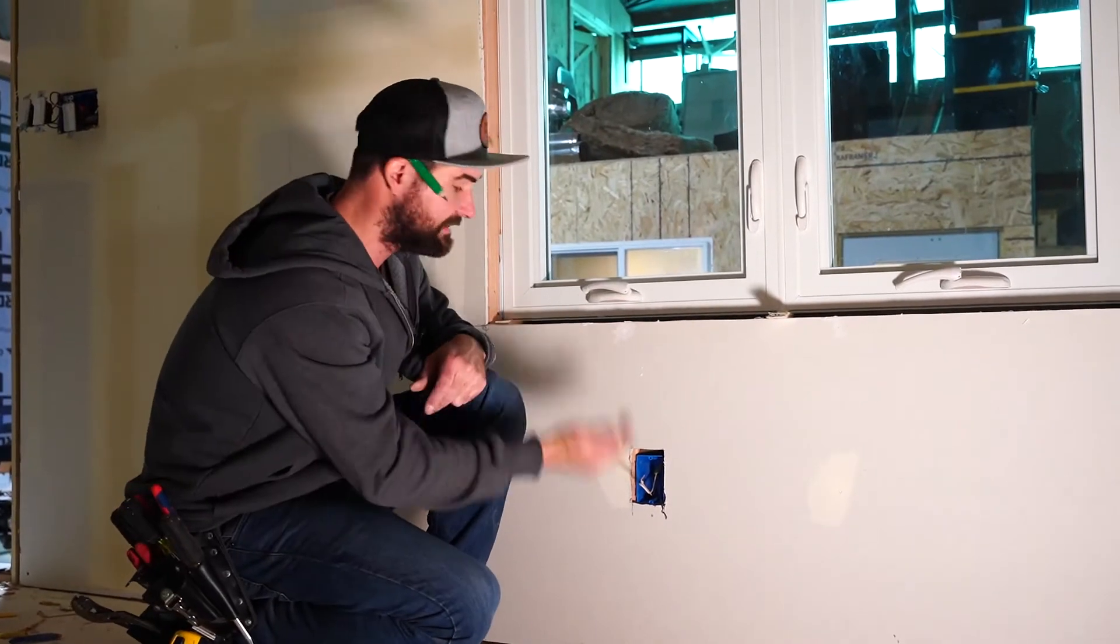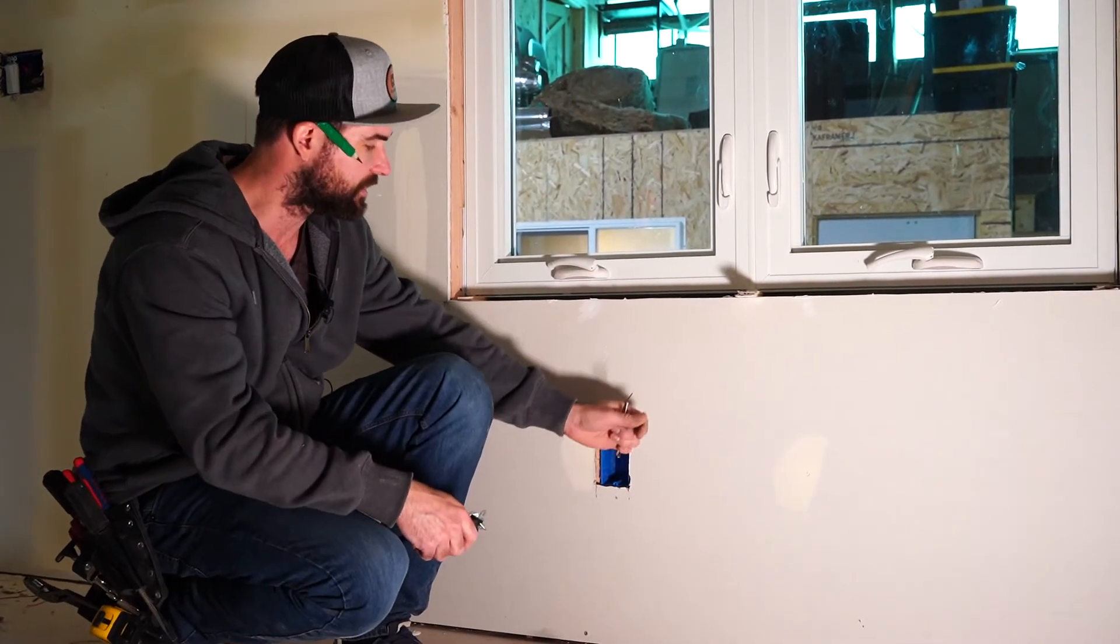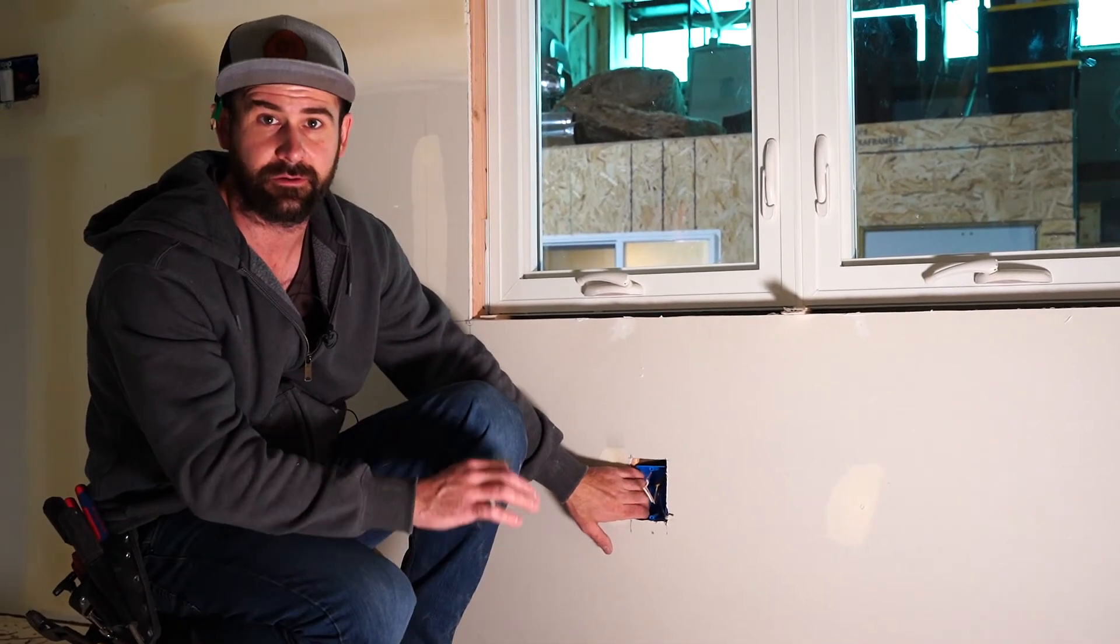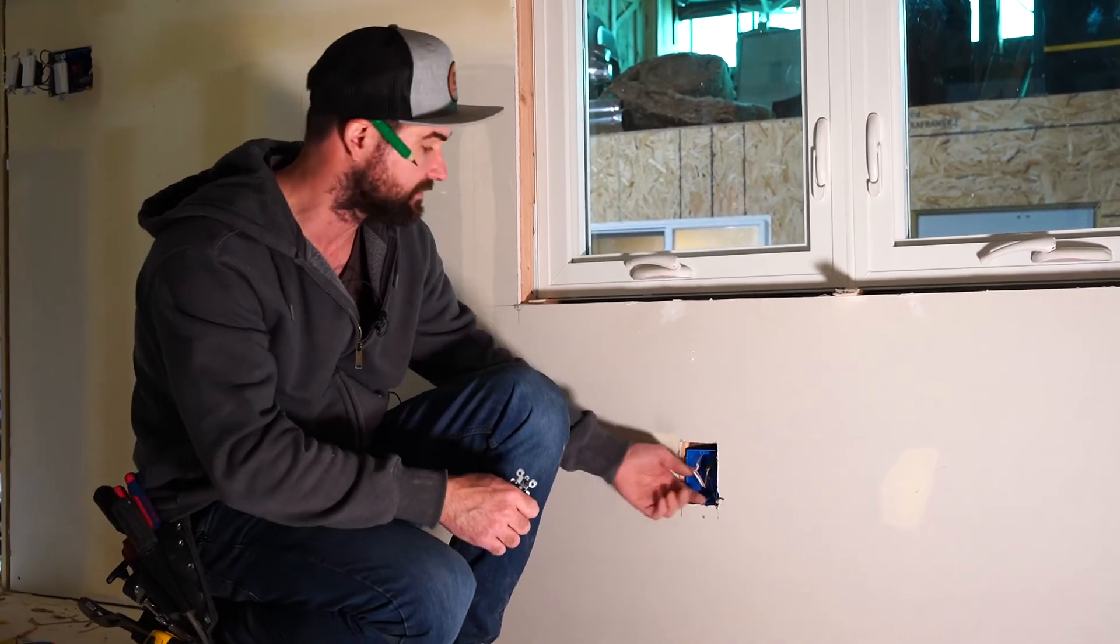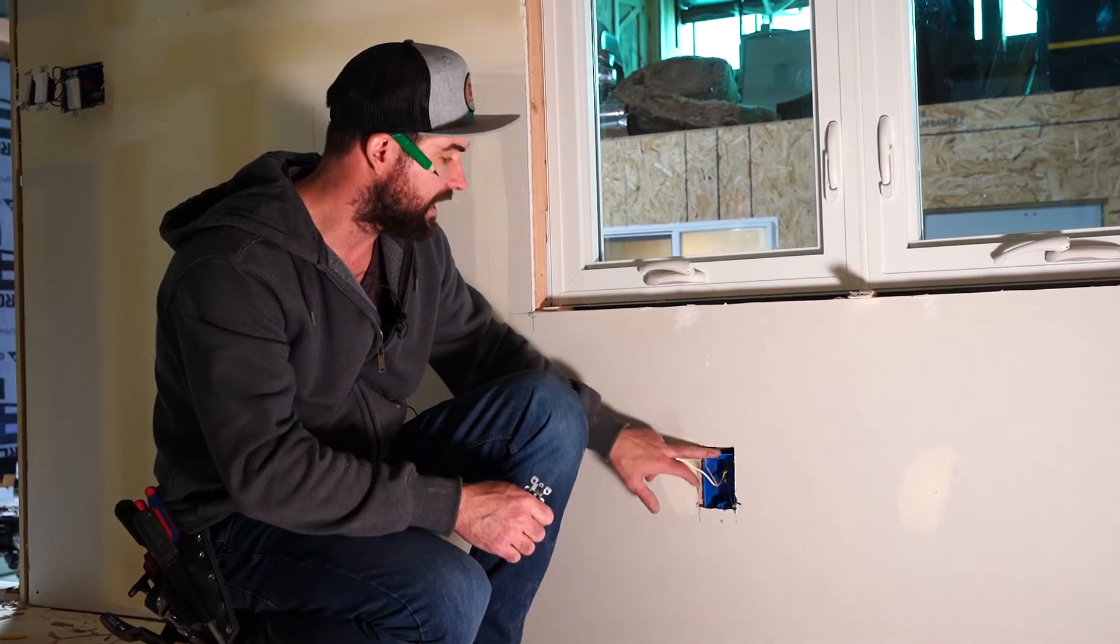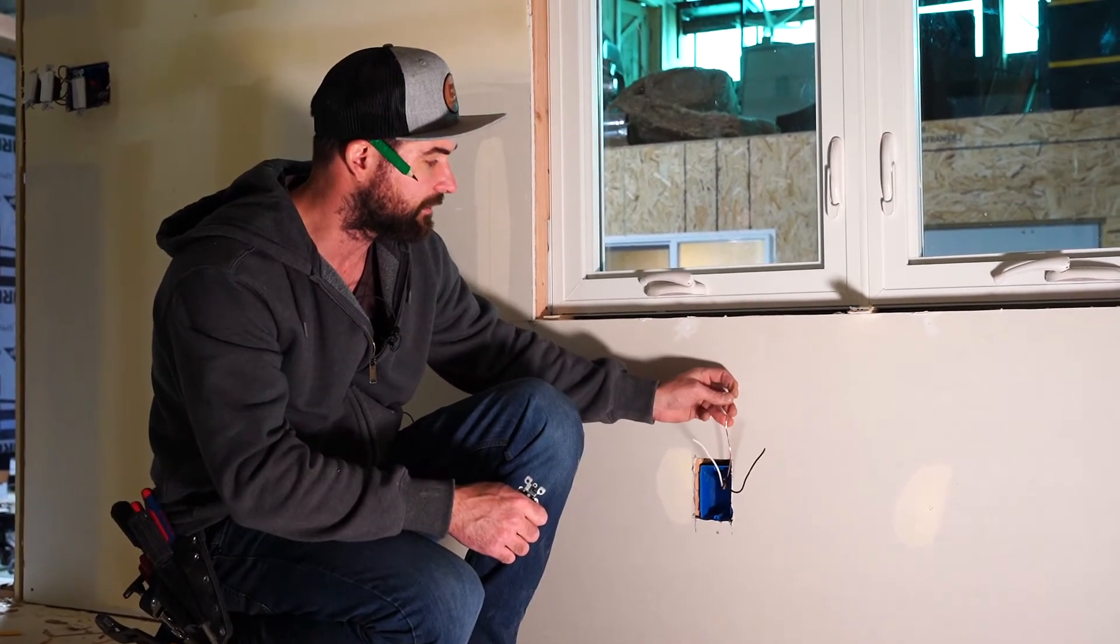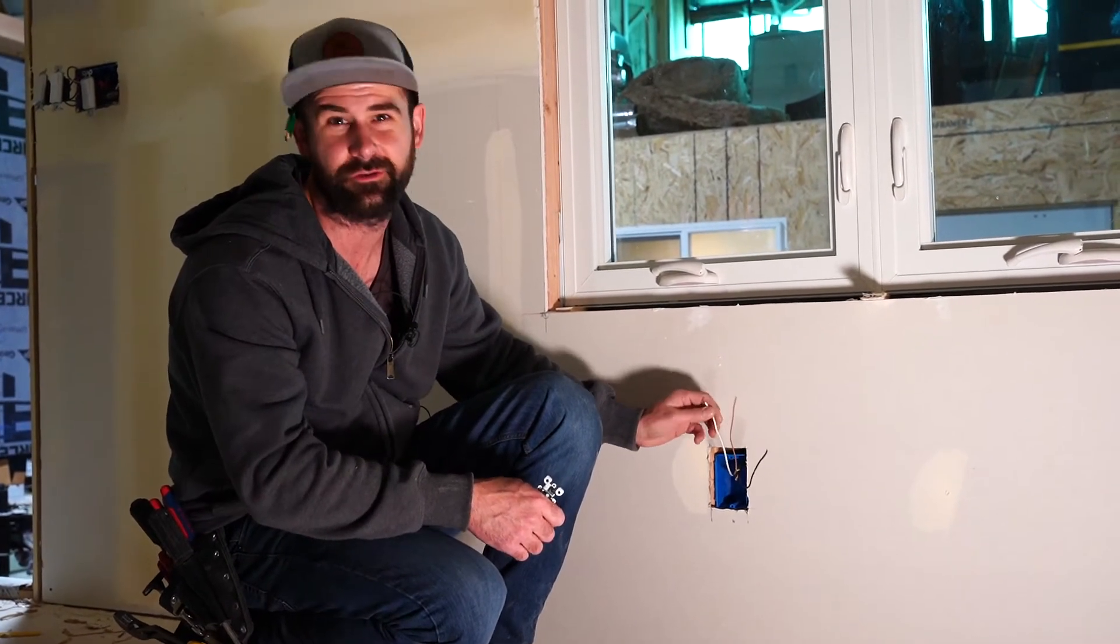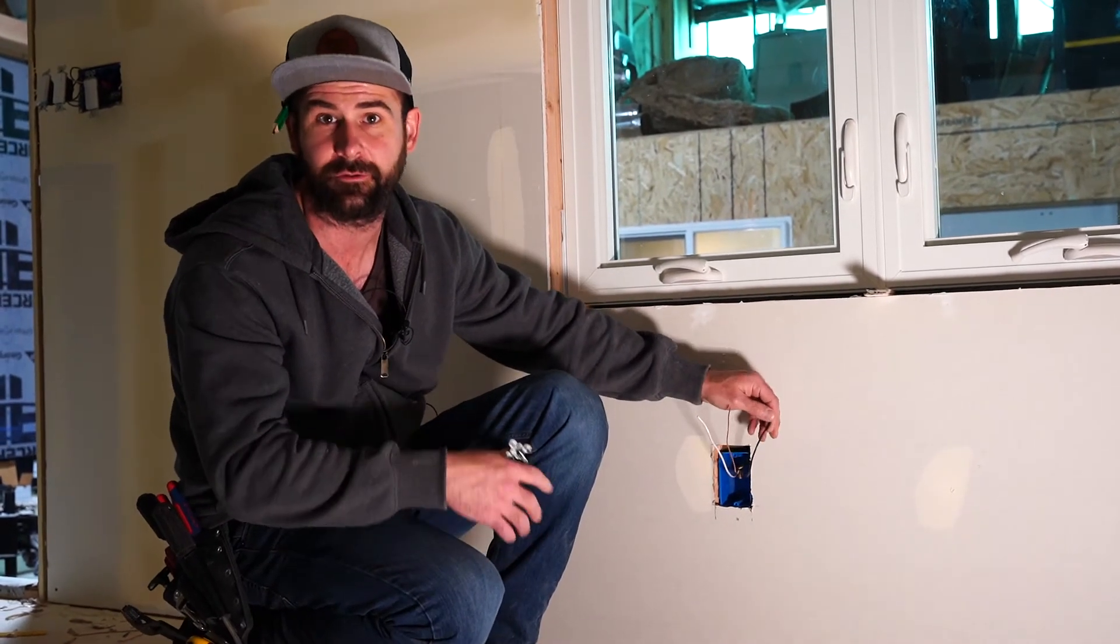What I want to teach you is how to install an outlet. What we have here is brand new construction. This is actually Romex. You'll know whether you have Romex or conduit in your house based on the type of box and how many wires are coming out of the outlet. What you're going to look for is the blue box and then you'll see the three wires. One of them will be a bare copper, that's your ground. And then you have your white, that's your neutral or your negative. And then you have your black, which is your hot or your positive.